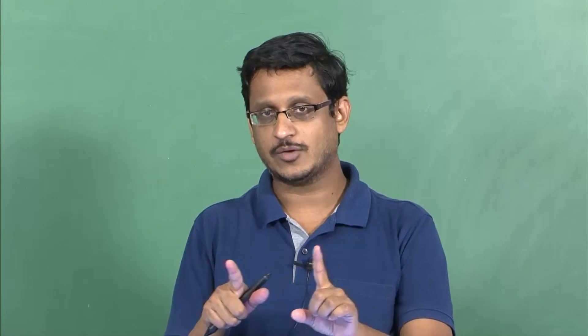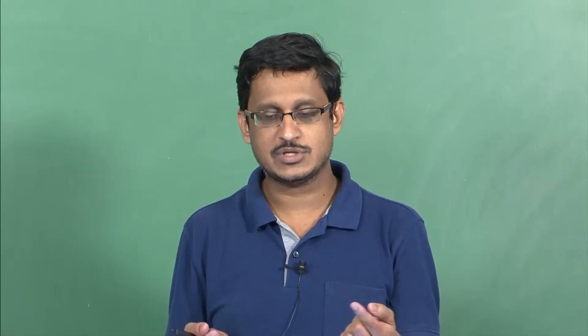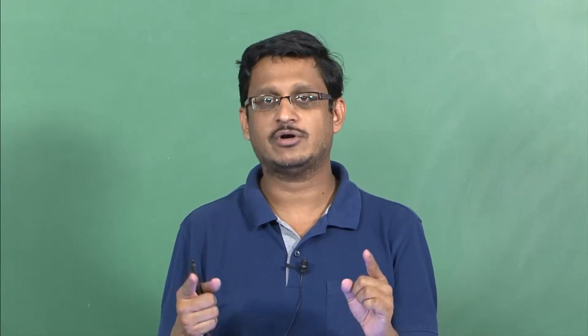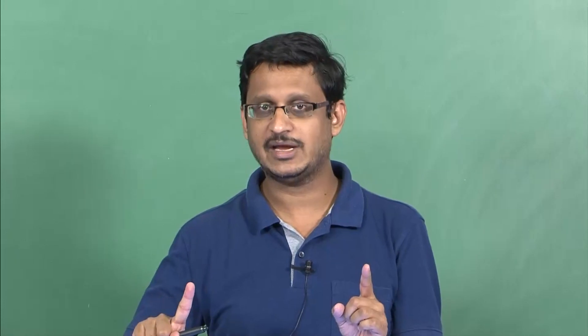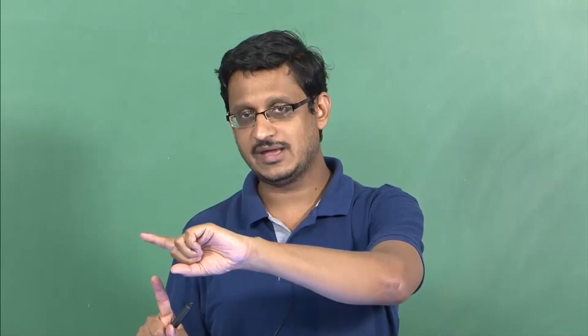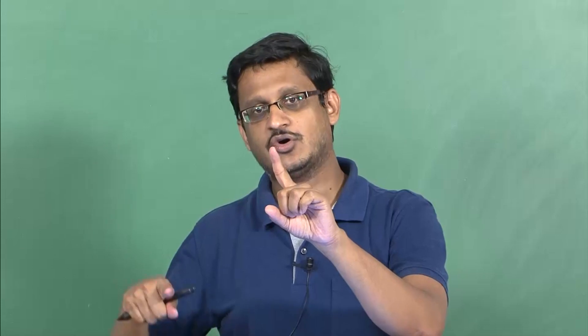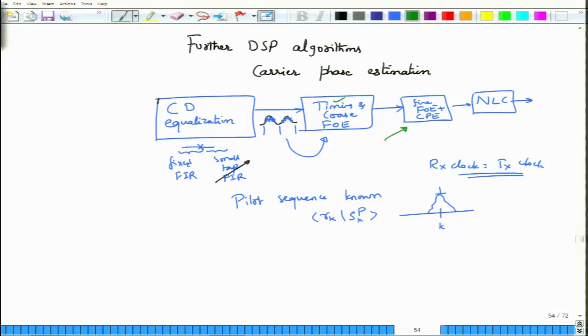You have to have the same sampling instance as at the transmitter. You can allow for a constant delay, but using a pilot sequence and correlating actually allows you to know how much overall delay to account for. Once you have taken that delay into account, the transmitter clock will be running at the same rate as the receiver clock, and they will be in phase with respect to each other. So the first step is to complete this timing recovery.